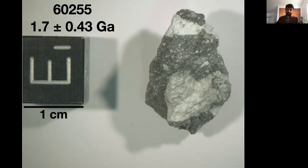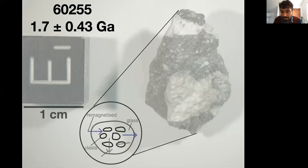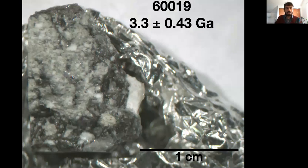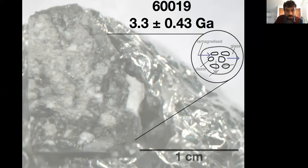Our young regolith breccia 60255 comes in at about 1.7 billion years old — we've sent the sample for radiometric dating to get a tighter constraint. It shows a dark, fine-grained glassy matrix with white feldspathic clasts. Our ancient regolith breccia 60019 is about 3.3 billion years old, also sent for radiometric dating, and similarly shows a fine-grained glassy matrix with white feldspathic clasts.